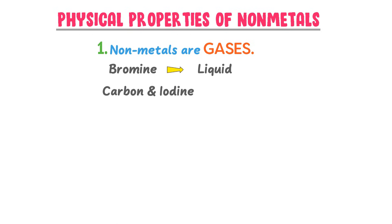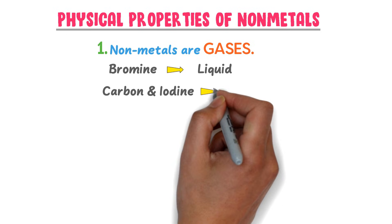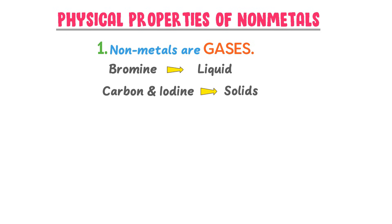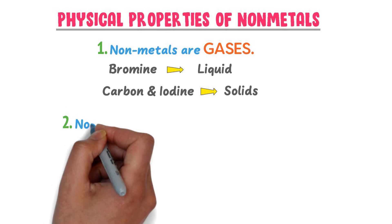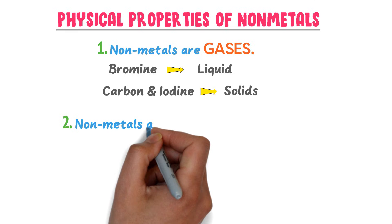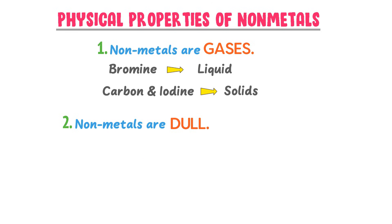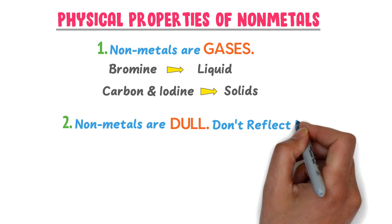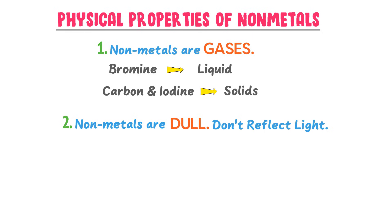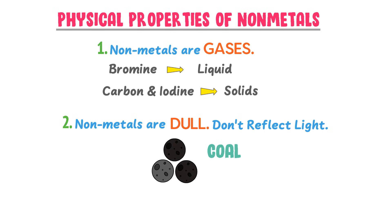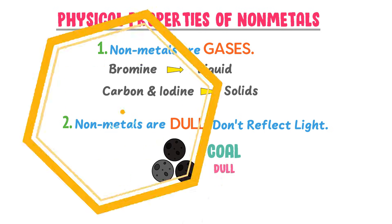Carbon and iodine are non-metals and solid at room temperature. Secondly, non-metals are dull — it is because they do not reflect light very well. For example, charcoal is very dull.